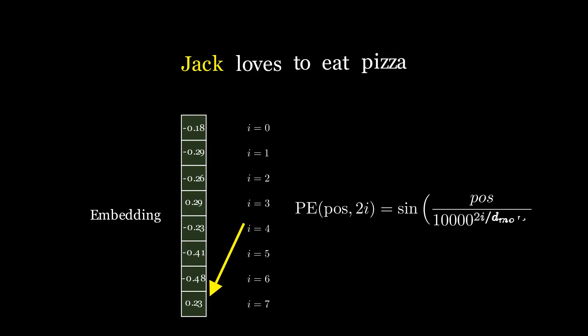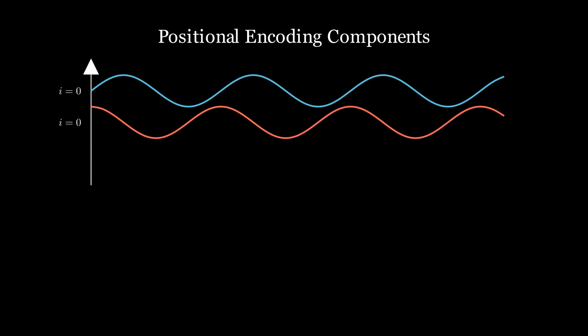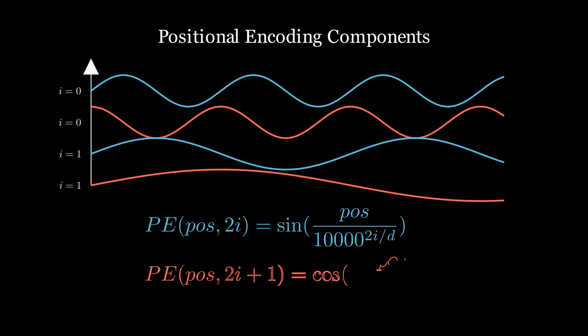Looking at the equation again and plotting it out along with cosine, we can see for each position and for the different i, we have different values. These values then can be added to the embedding vector for each position, and we have added positional information to the sentence.